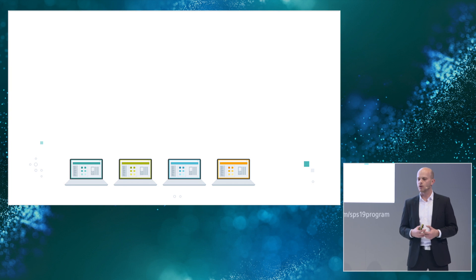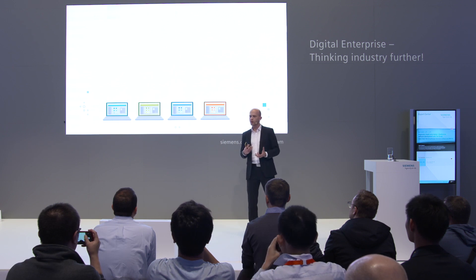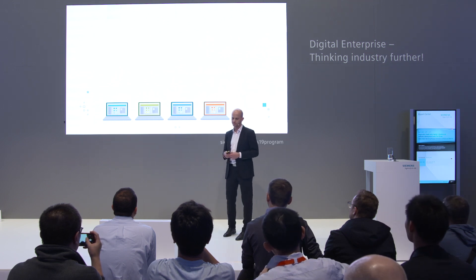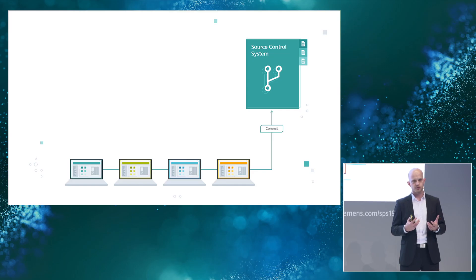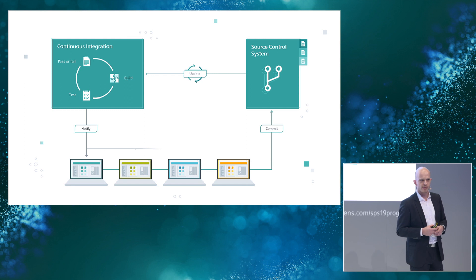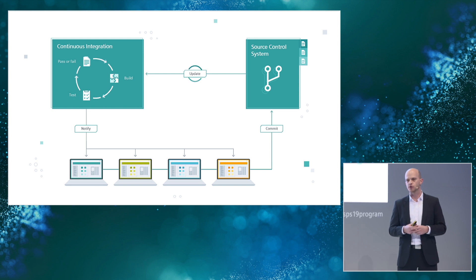So what is continuous integration at all? It all starts with seamless cooperation in the automation team — the only way we can manage the enormous complexity of today's software development projects. To ensure transparency in this development process, all changes have to be versioned and commented centrally. And then the cycle of continuous integration starts: various software elements create software modules, these modules are tested in a loop, and the results are conveyed back to the automation team, closing this loop of software development.